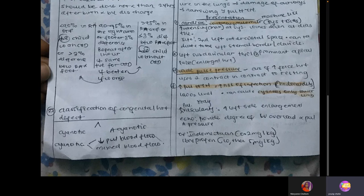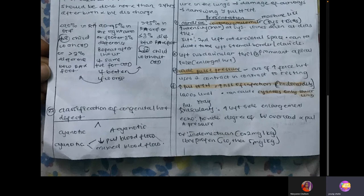Treatment of PDA: we need to close the ductus arteriosus. We give indomethacin. The mechanism of action is that prostaglandin keeps the ductus open, so indomethacin inhibits prostaglandin production, initiating closure. Ibuprofen can also be used, but the drug of choice is indomethacin.